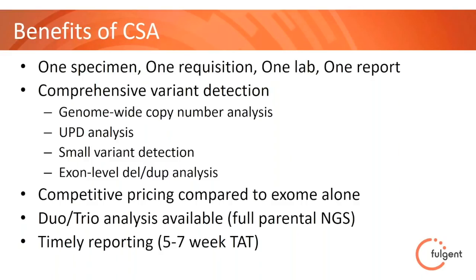To summarize the benefits of CSA: it's a one specimen, one requisition, one lab, one report test. For you, that also means a pre-test and post-test for one test, not for five or six different tests iteratively. It includes comprehensive variant detection for genome-wide copy number analysis, UPD, small variant detection, and even exon-level deletions and duplications. We price this to be competitive with exome alone — compared to a standard exome test at that price point, you're also getting a microarray and fragile X at no extra charge.